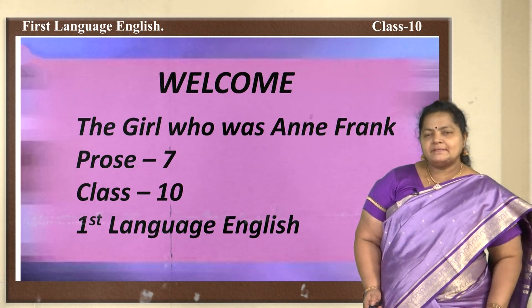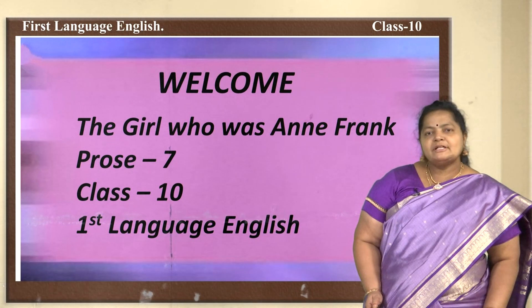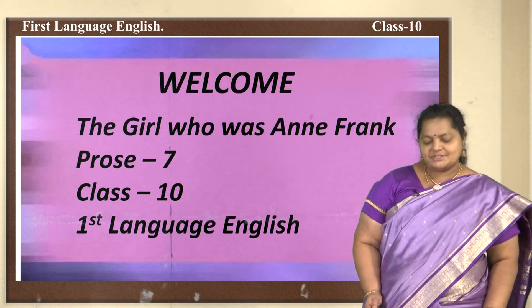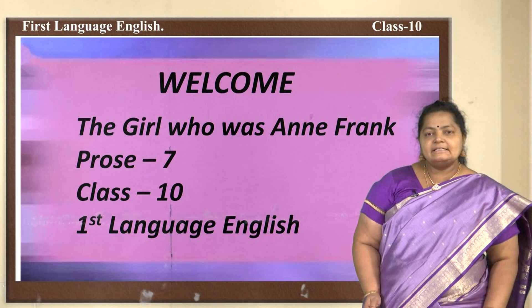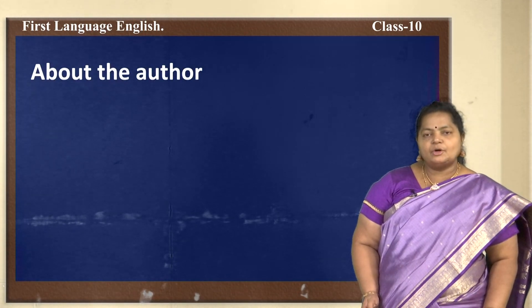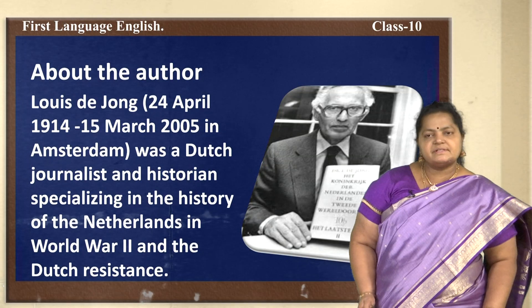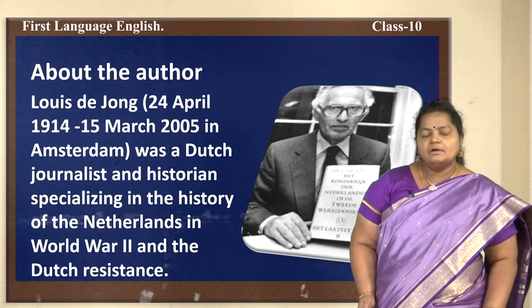Hello and welcome back, children. Today we are going to learn about 'The Girl Who Was Anne Frank,' Prose 7, Class 10 First Language English. Before we go to the lesson, let us see about the author, Louis D. Jong — born 24th April 1914, died 15th March 2005 in Amsterdam. He was a Dutch journalist and historian specializing in the history of the Netherlands in World War 2 and the Dutch resistance.